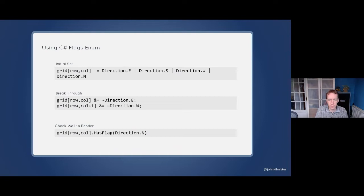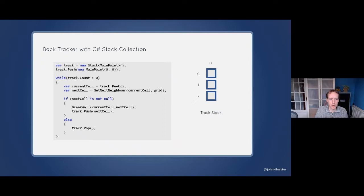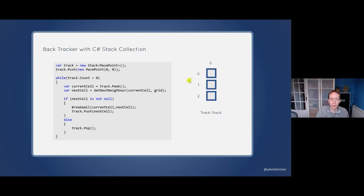Now let's look at the algorithm we'll need to generate the maze. In this implementation we're going to use a C# stack collection. If you haven't seen a stack before, it's the opposite of a queue — where a queue is FIFO (first in, first out), a stack works LIFO (last in, first out). We start by creating that collection, then push our initial value in — our starting point, which in this case is 0,0. I've added a simple example with just a single row of three cells to illustrate this.